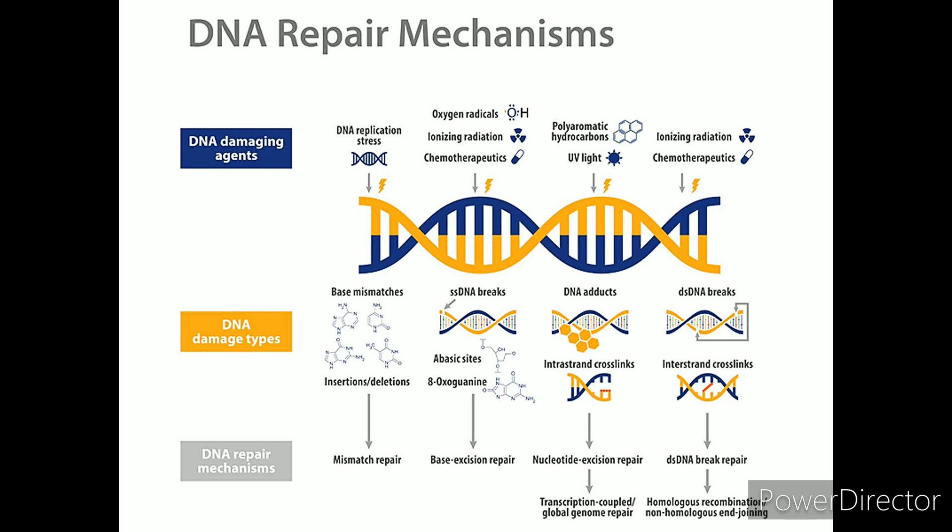Chemical Damage to DNA. Many chemical mutagens — some exogenous, some man-made, some environmental — are capable of damaging DNA. Many chemotherapeutic drugs and intercalating agent drugs function by damaging DNA.